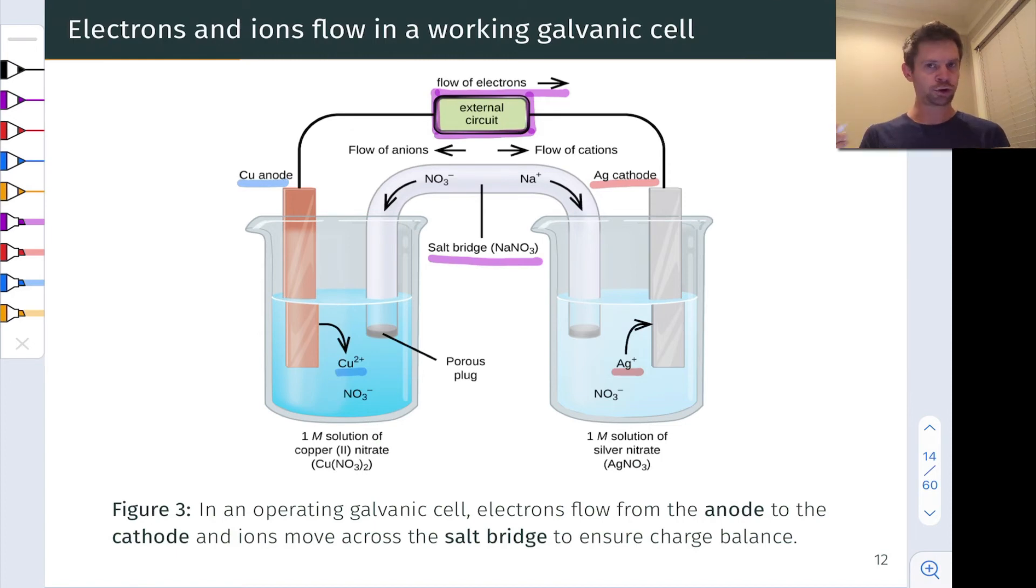Recall that we said positive charge would build up over here in the absence of the salt bridge. What happens though is that negatively charged anions will flow toward this half cell to neutralize the positive charge that's being built up as the copper metal converts to copper two plus.